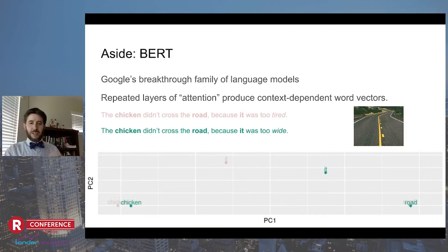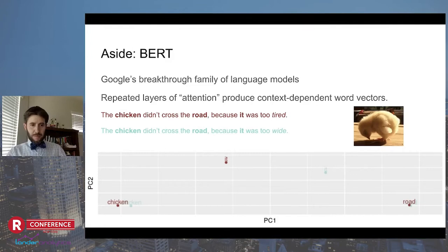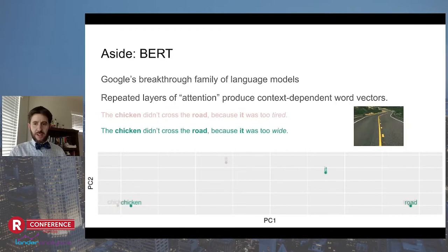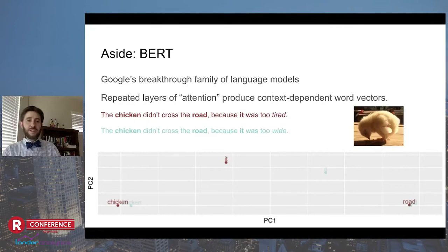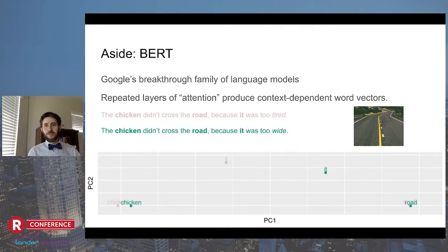If it is too tired, then 'it' is probably the chicken, but if it is too wide, then 'it' is probably the road. I've plotted the word vectors for some of the words in these sentences. Between the two sentences, 'it,' 'chicken,' and 'road' don't change very much, but the vector for 'it' changes quite a lot. It's closer to chicken when it's tired and it's closer to road when it's too wide. These context-dependent word vectors are pretty cool, and we wanted to be able to do this sort of thing in R.